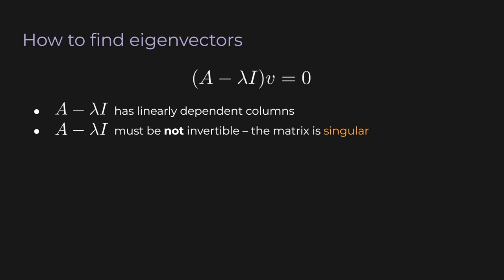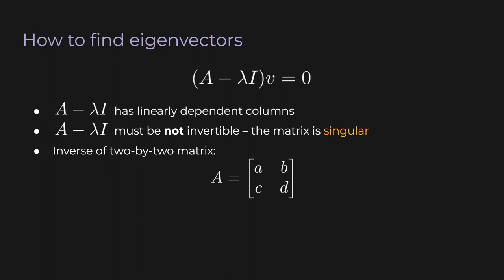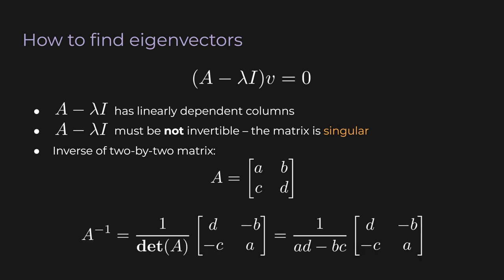A matrix that is not invertible is also known as a singular matrix. To keep things simple, let's look at the case where A is a 2×2 matrix with elements a, b, c, and d. Here's the inverse of a 2×2 matrix: you swap a and d, negate b and c, and divide everything by the determinant, which is ad minus bc. If the determinant is zero, then we're dividing by zero, which isn't okay, so in that case the inverse doesn't exist — the matrix is singular.